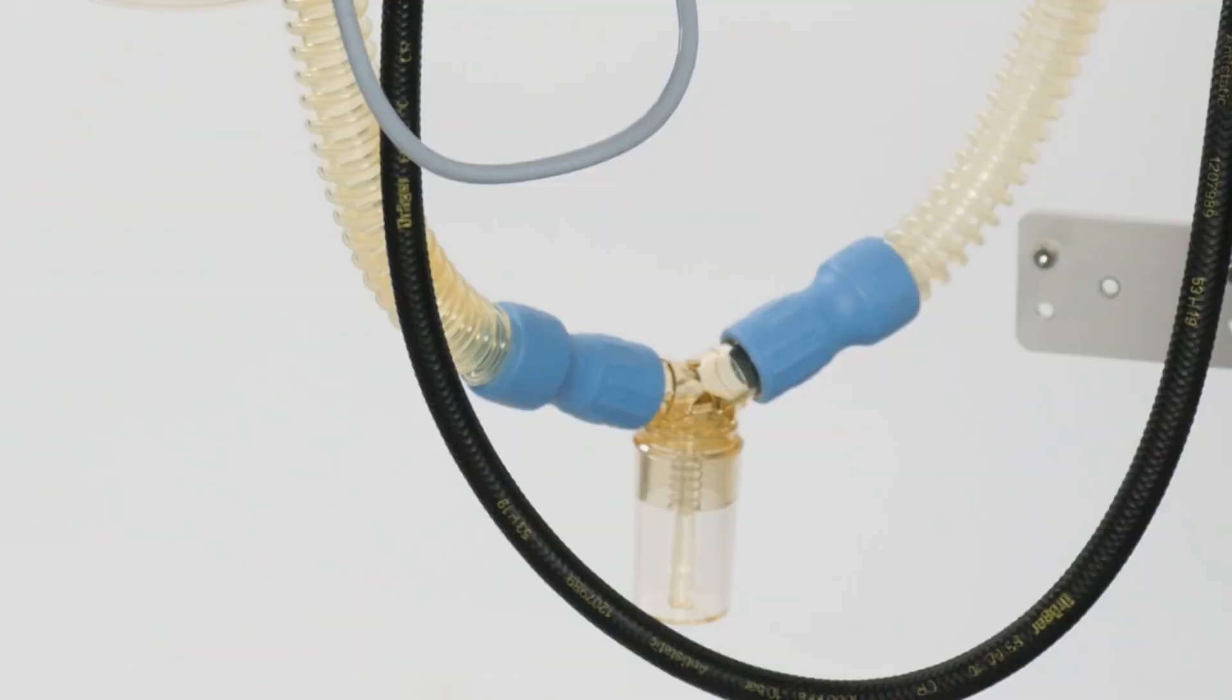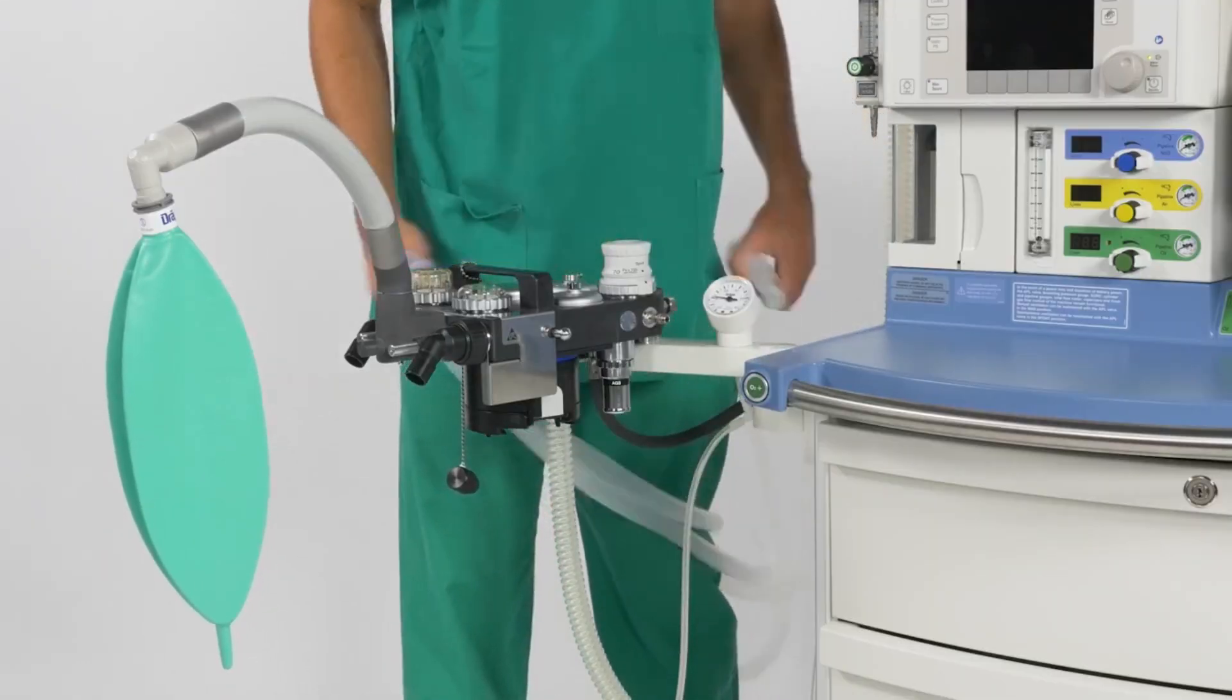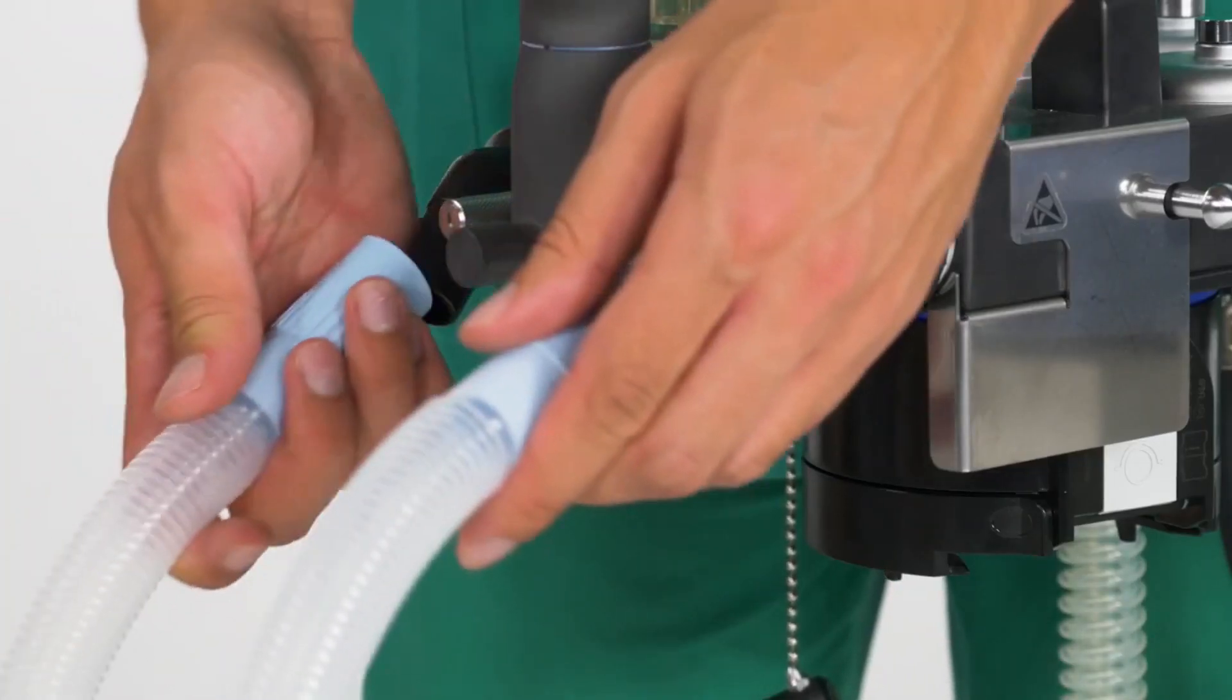And third is the inspiratory limb, which allows passage of fresh gas flow to the patient for inspiration. The expiratory limb allows passage of expired gas from the patient.